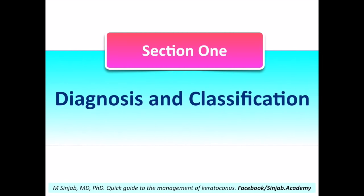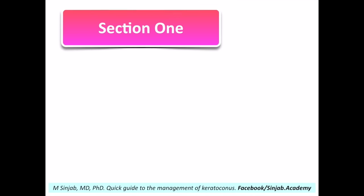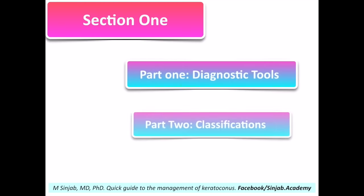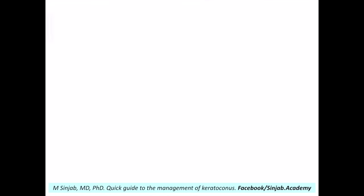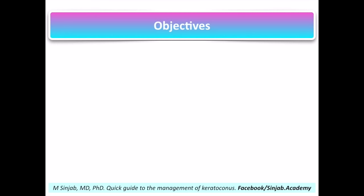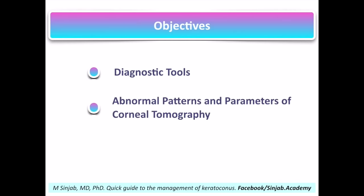Section 1: Diagnosis and Classification. This comes in two parts: Part 1, Diagnostic Tools, and Part 2, Classifications. In this section, the audience will experience Diagnostic Tools, Abnormal Patterns and Parameters of Corneal Tomography, and the Classifications of Ectatic Disorders.